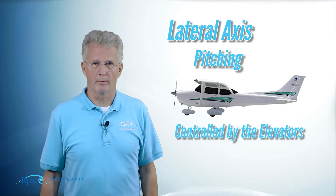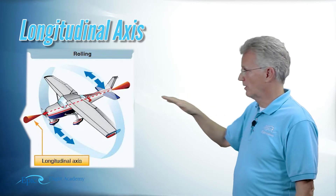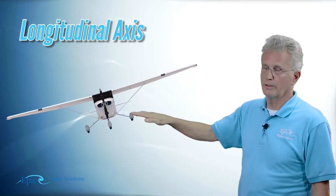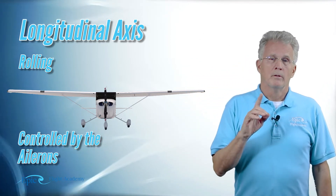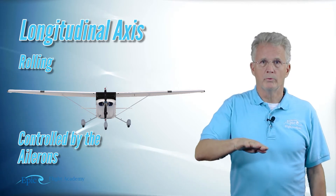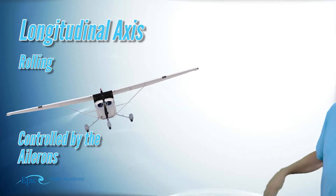The second axis is the longitudinal axis. When we say longitudinal, think long. The longitudinal axis goes from the nose through the tail. You can think of the airplane rolling left and right around that longitudinal axis. That longitudinal rolling motion is controlled by the ailerons. Remember, we didn't say turning — we said rolling. The ailerons control roll around the longitudinal axis.